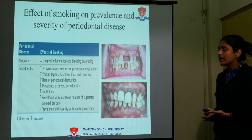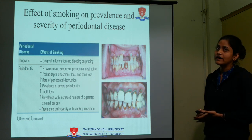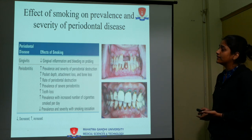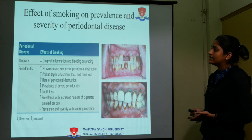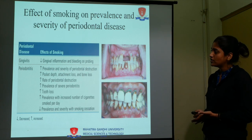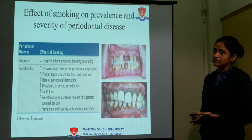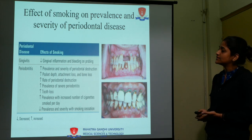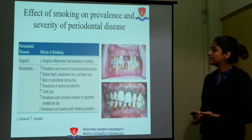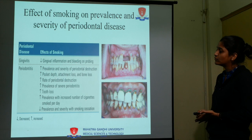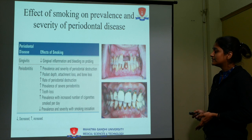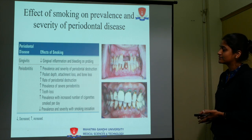When coming to periodontitis, comparing smokers and non-smokers, smokers show increased prevalence and severity of periodontal destruction, increased pocket depth, increased attachment loss and bone loss, increased rate of periodontal destruction, increased prevalence of severe periodontitis, increased tooth loss, and increased prevalence with increased number of cigarettes smoked per day. Decreased prevalence and severity has been seen with smoking cessation.